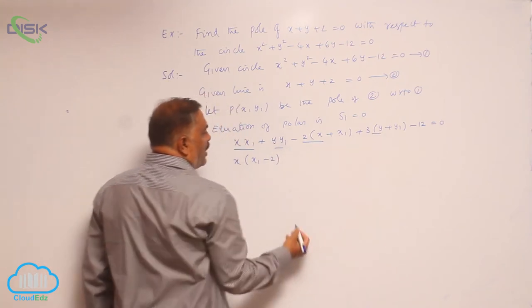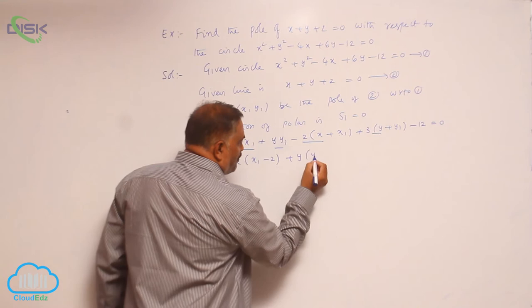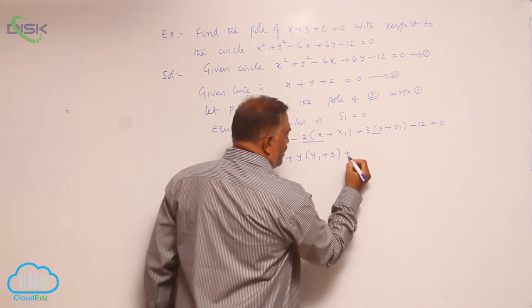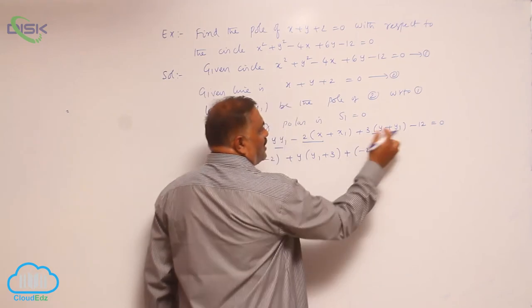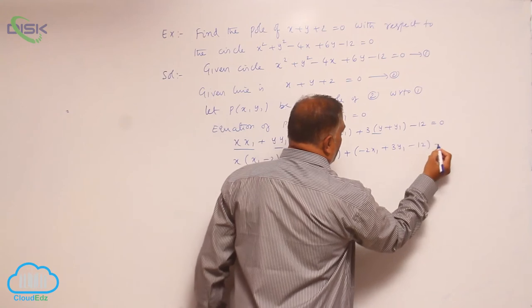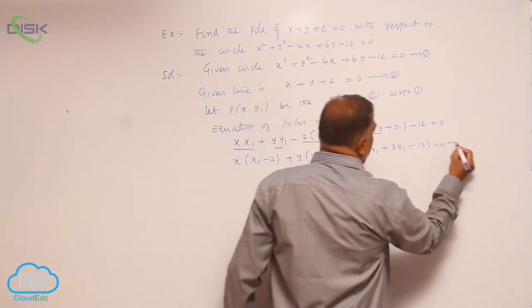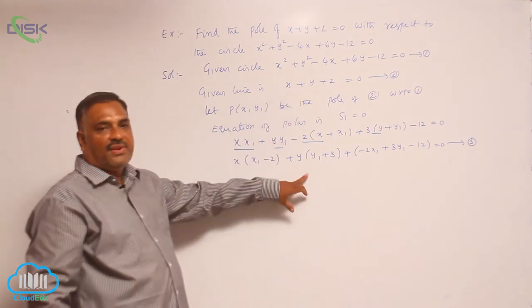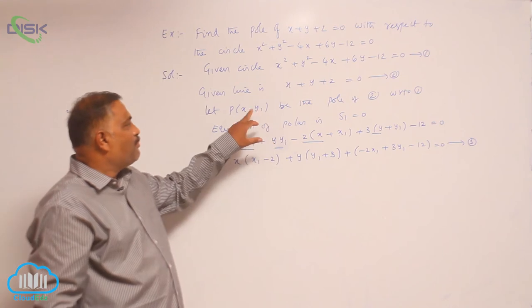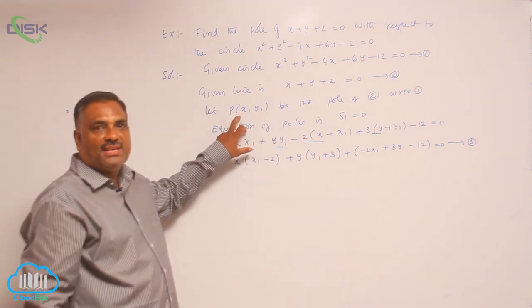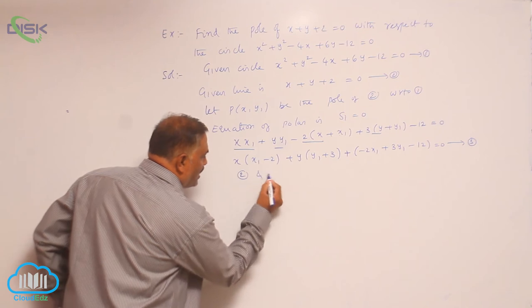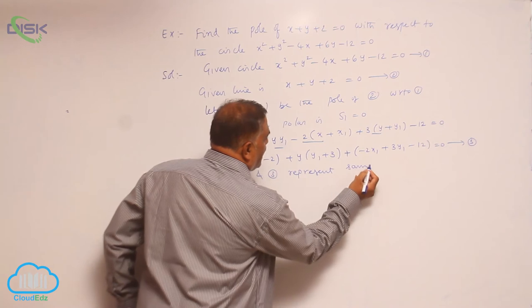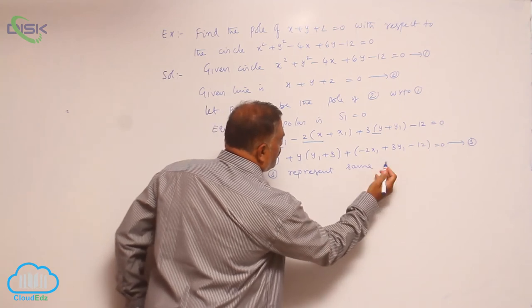The balance terms: -2x1 + 3y1 - 12 = 0. Call it equation number 3. Now equation 2 and equation 3 represent the same polar. 2 and 3 represent the same polar, same, or we can write same line.